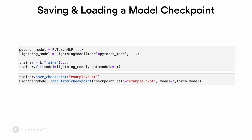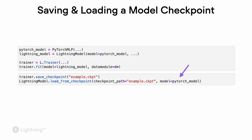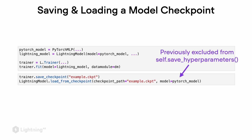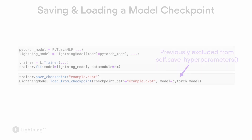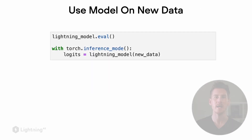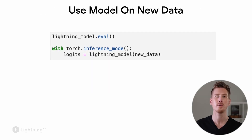Once we have a checkpoint, we can reload it using the load_from_checkpoint method. Notice that we are also providing the PyTorch model here as an argument, because we previously excluded it when we called the save_hyperparameters method.